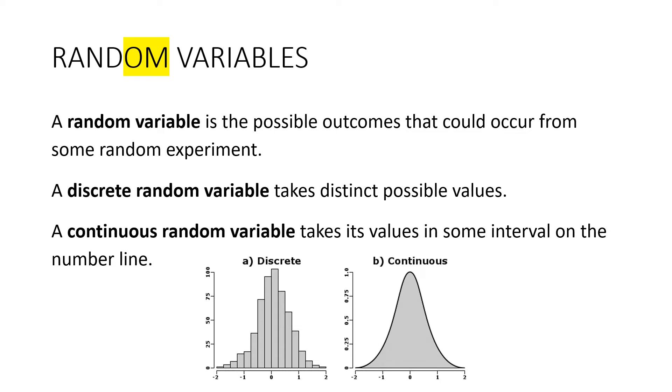A continuous random variable, which we'll look at in Year 12, takes its values in some interval on the number line. And it is smooth. You see that, the difference there? So discrete is sort of jagged, like whole numbers, whereas continuous is all numbers.